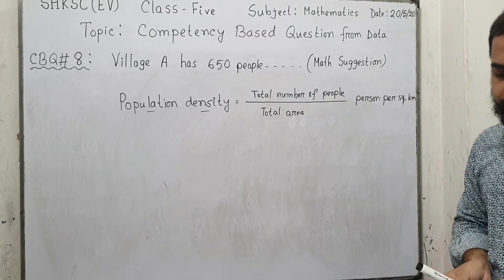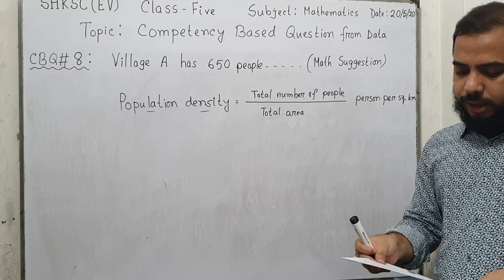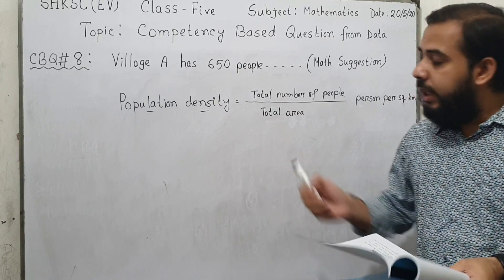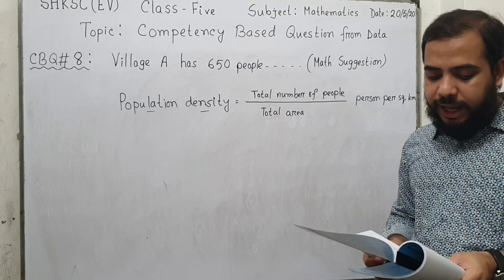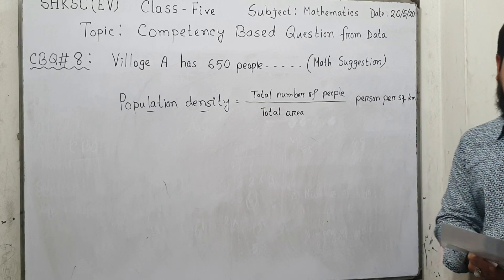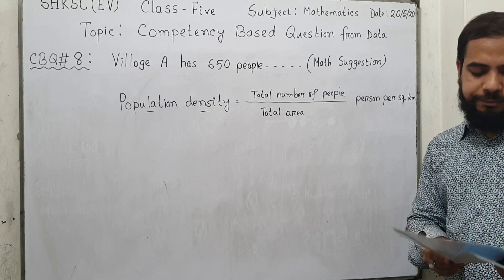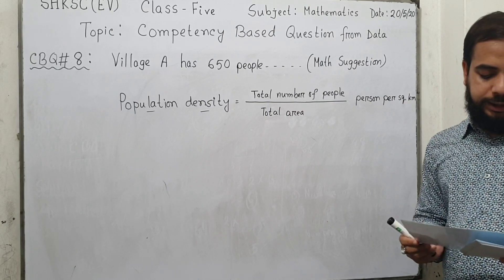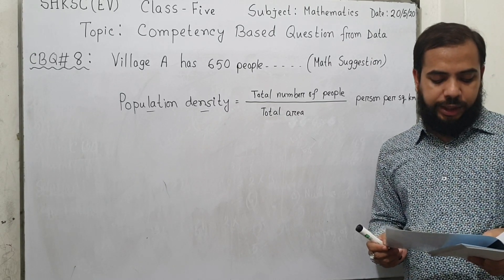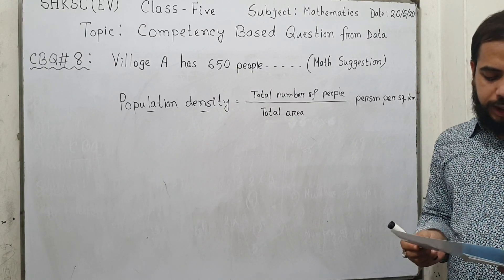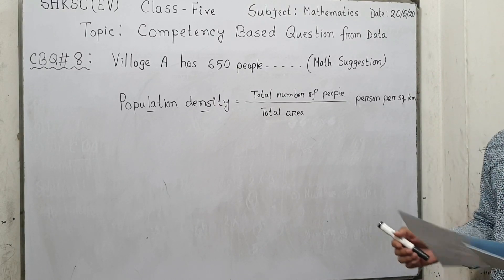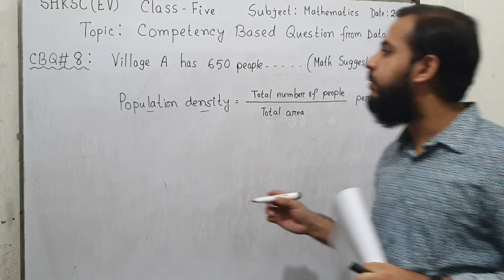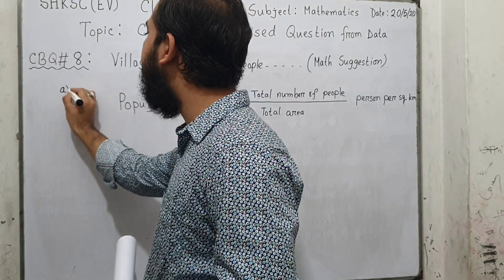Let's start Question number 8 from the math suggestion I provided before the school was closed. Village A has 650 people in an area of 50 square kilometers, and Village B has 300 people in an area of 25 square kilometers. Question 8A asks: find the population density of Village A.